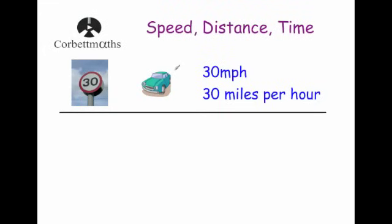In this video we're going to look at speed, distance and time. We're going to look at some problems involving these. Here we've got a car traveling through a speed limit of 30 miles per hour. If the car is traveling at 30 miles per hour, its speed would be 30 mph, and that means in every hour it drives 30 miles. A speed is a measurement of how far you travel in a certain amount of time.